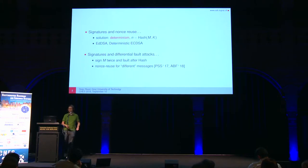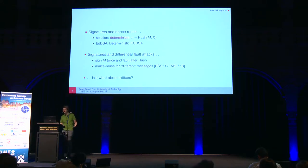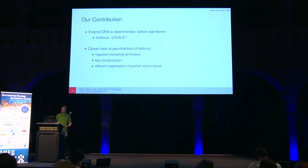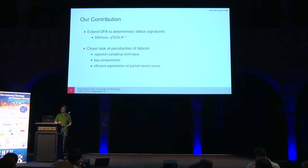This scenario was already explored for elliptic curve-based schemes. But we have to ask: is it specific to elliptic curves, or can we do it on other schemes as well? That's where lattices come in. We extend differential fault attacks to deterministic lattice signatures, namely to Dilithium — which you should have heard of — and to Q-Tesla, both submitted to the NIST competition and both deterministic.